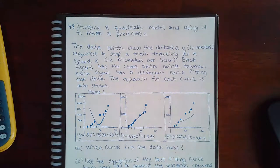So you have 4.8, choosing a quadratic model and using it to make a prediction. It says the data points show the distance y in meters required to stop a train traveling at speed x in kilometers per hour.